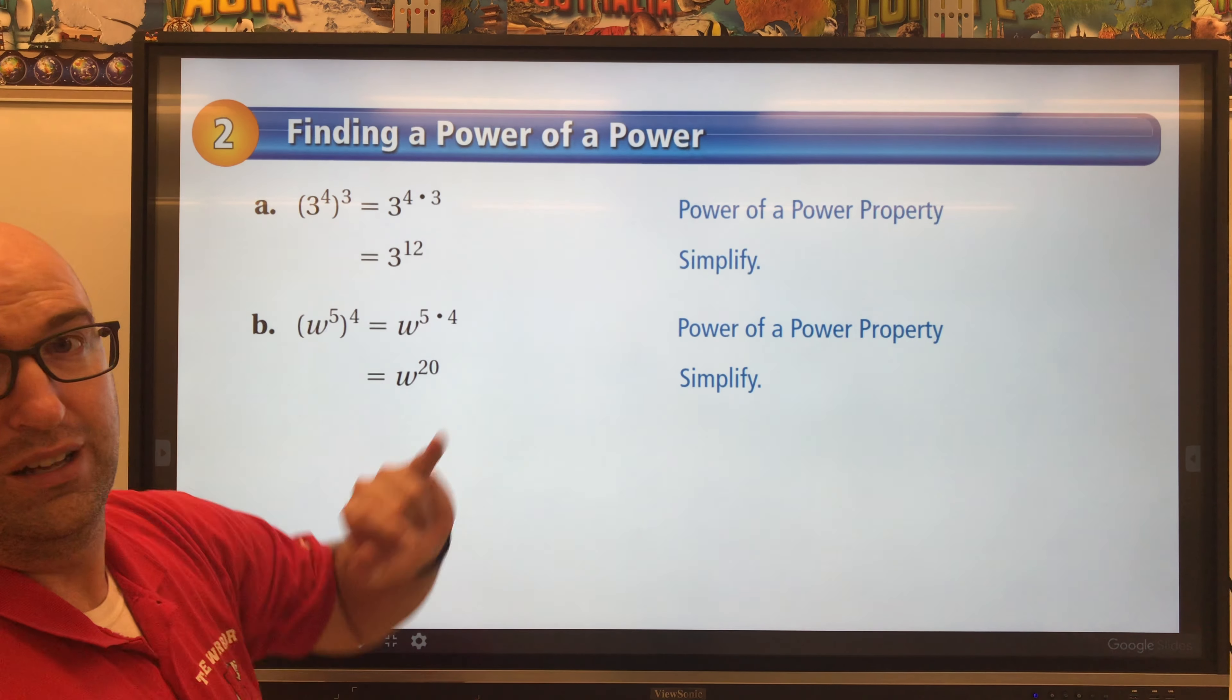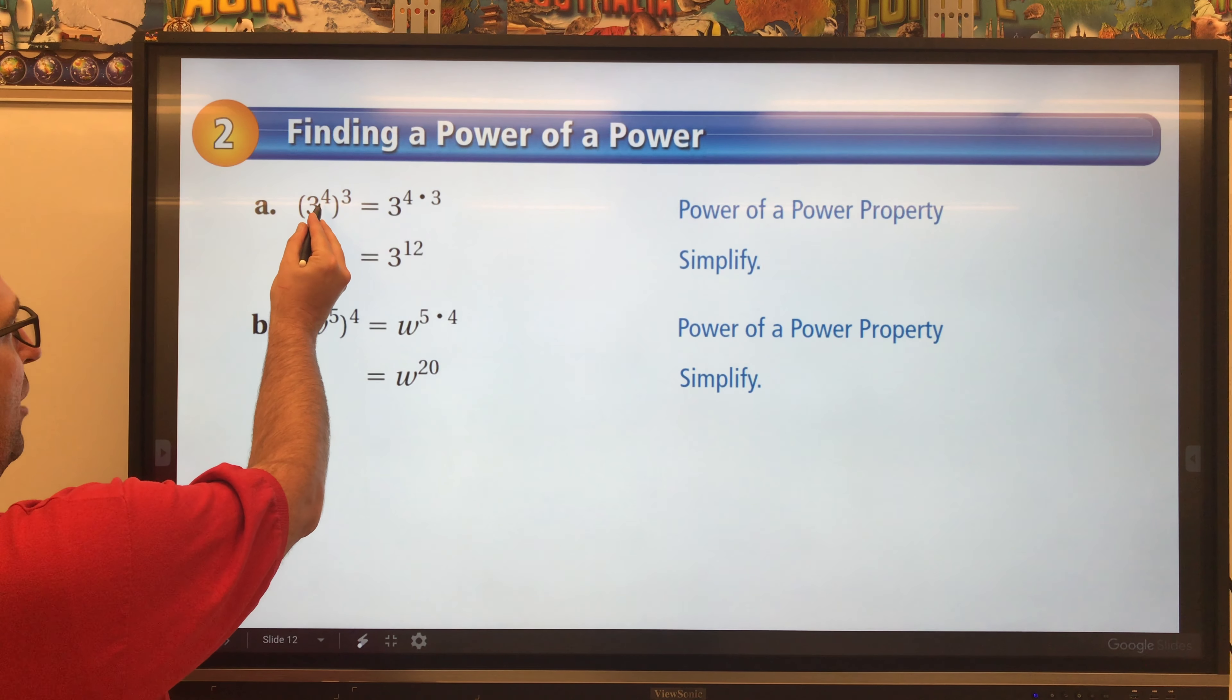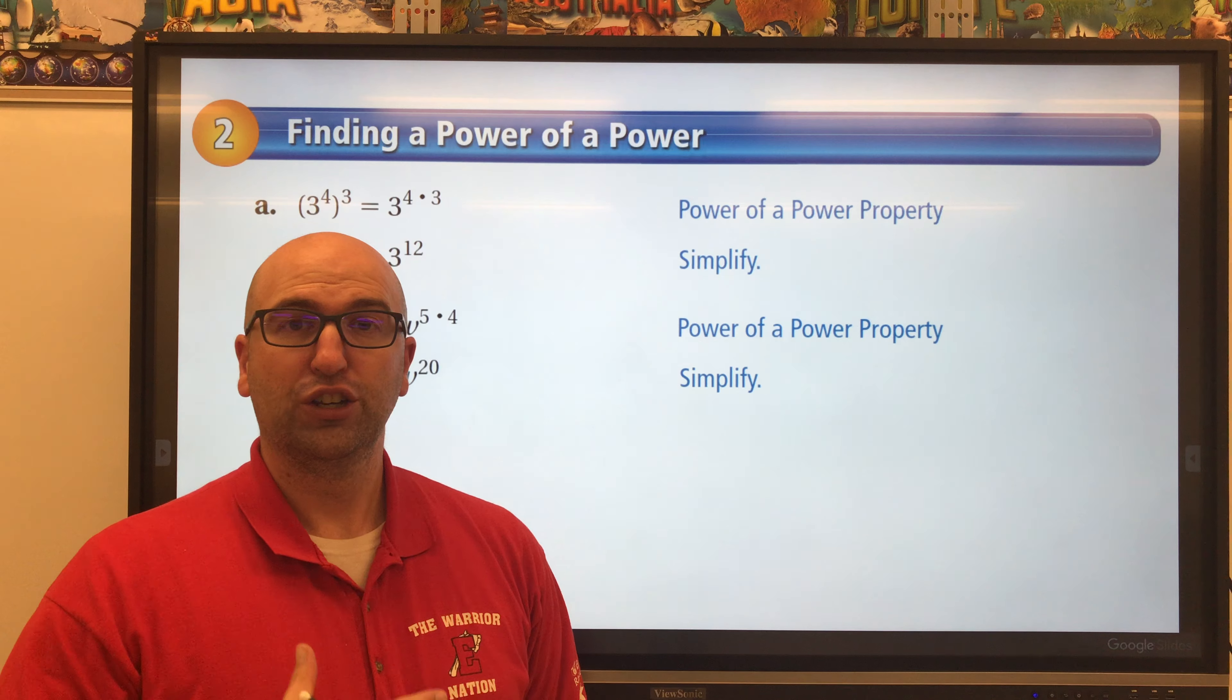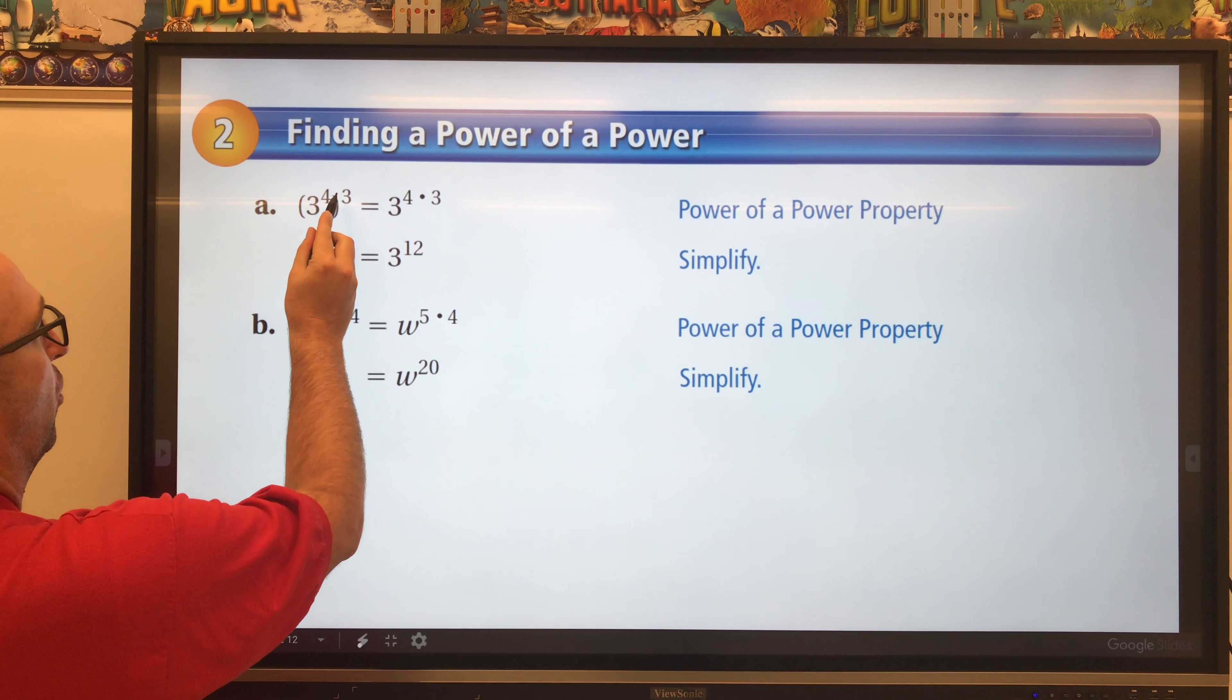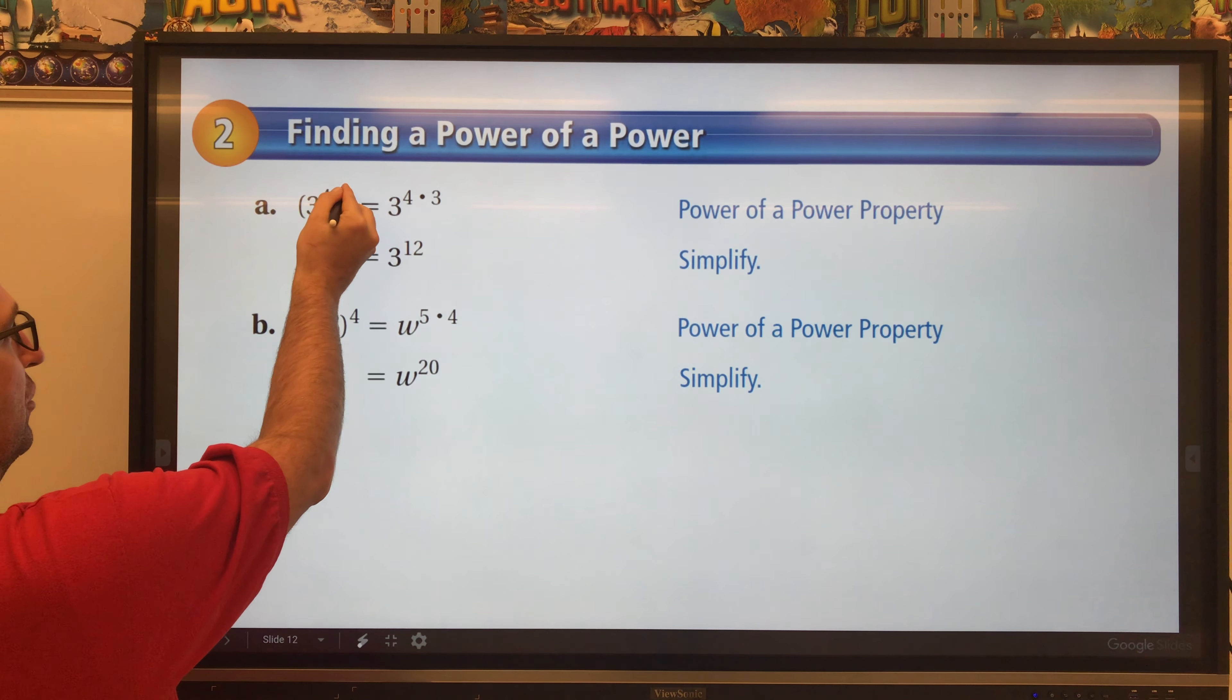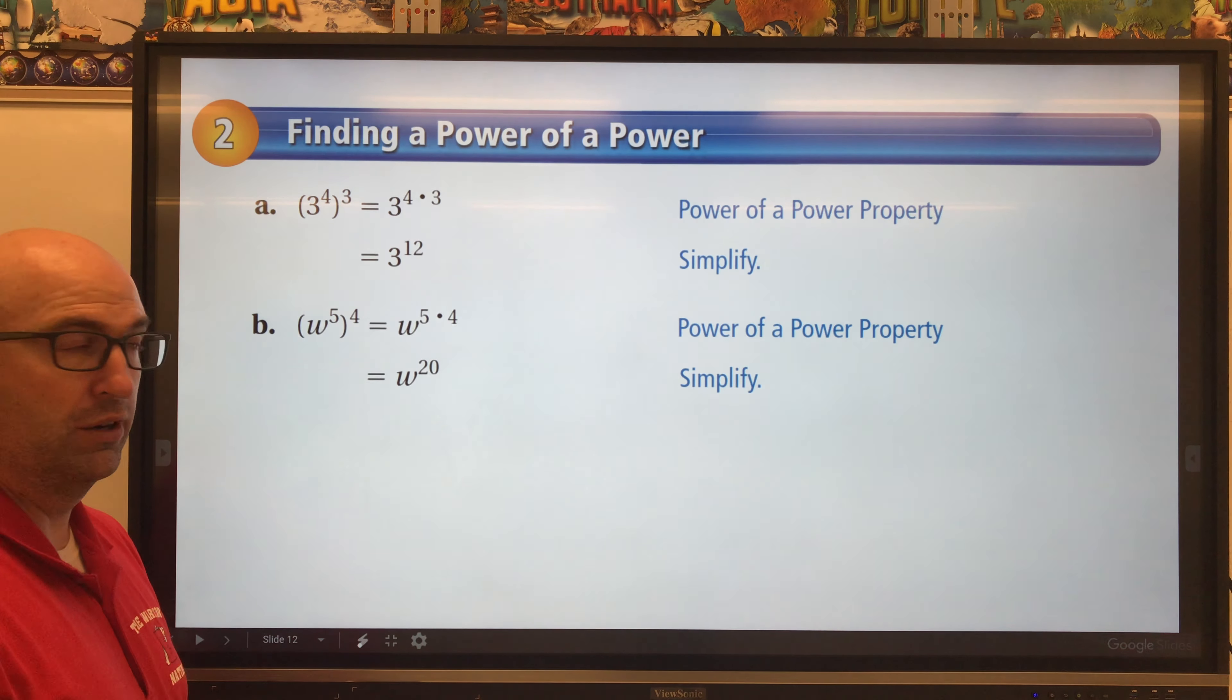Power of a Power, a few other examples of it. Here we have three to the fourth power to the third power. Remember on these ones you're not going to add. These ones you're multiplying the two powers. Four times three gives you twelve. So three to the fourth to the third actually equals three to the twelfth power.